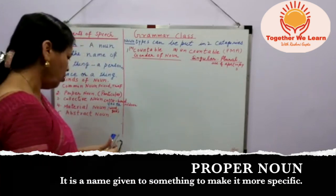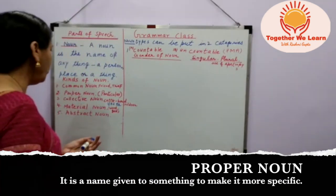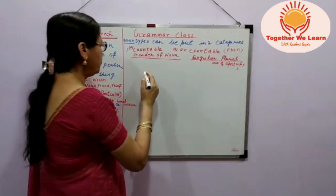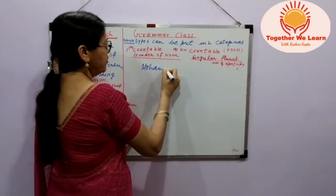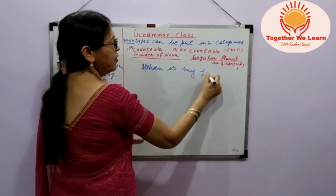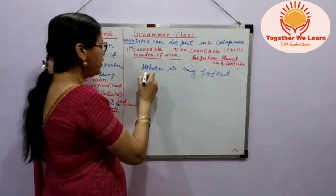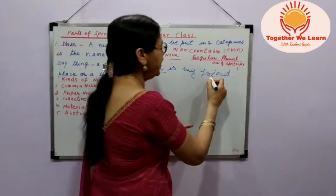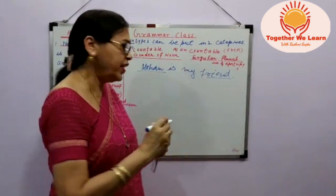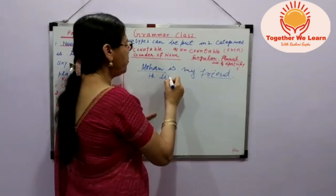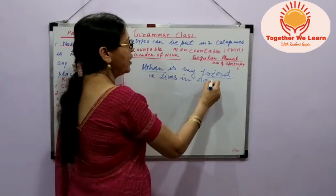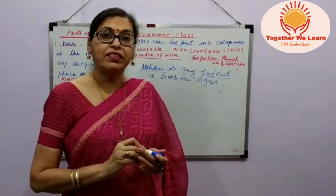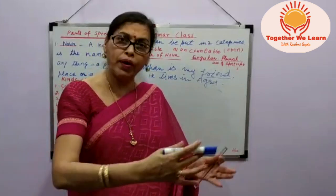Now come to proper noun. A proper noun refers to a thing that is particular — a specific name is given. Just as 'Mohan is my friend' — here 'Mohan' is particular, a name has been given, so it is a proper noun, and 'friend' is a common noun. He lives in Agra — so 'Agra' is again a proper noun. Now you must have understood the difference between common and proper noun.